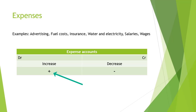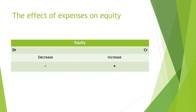Expense accounts increase on the debit side and decrease on the credit side. When an expense account is debited — so the expense account is increasing — it will have the effect that it decreases equity, because equity decreases on the debit side. Some adjustments to expenses can cause equity to increase if that transaction is recorded on the credit side.